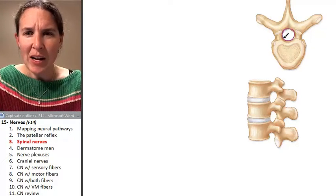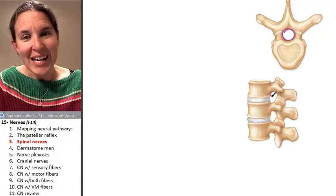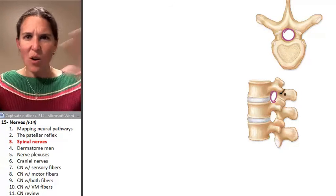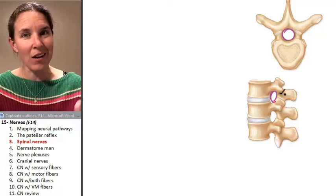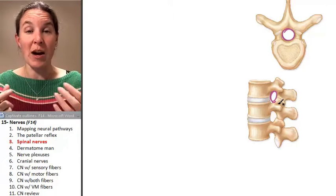The spinal cord is traveling through that hole. And our spinal nerves have to get out of there so that they can go into the periphery and do their thing. And to get out, they have to travel between those intervertebral foramina.